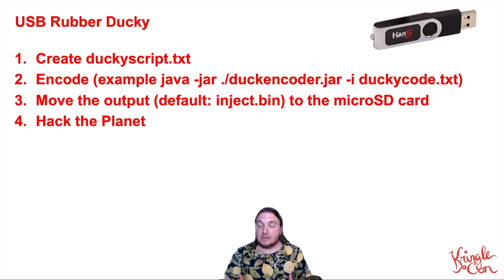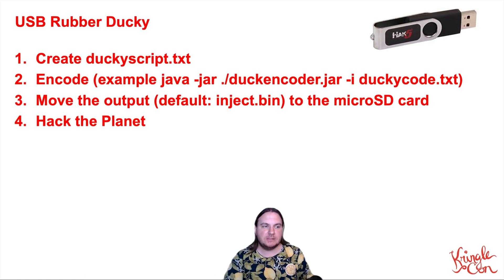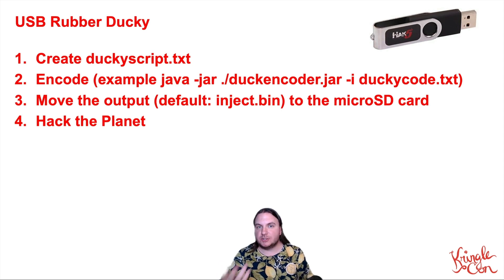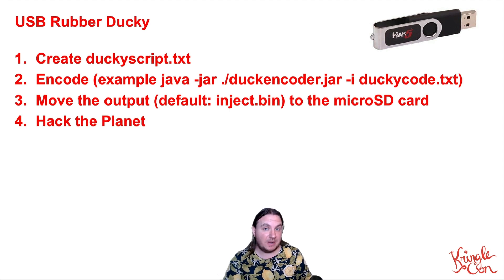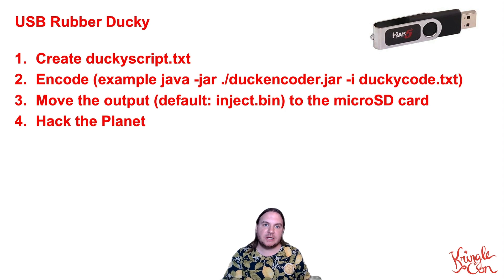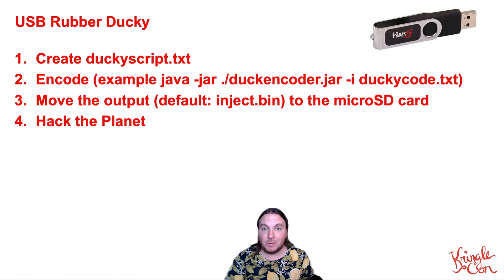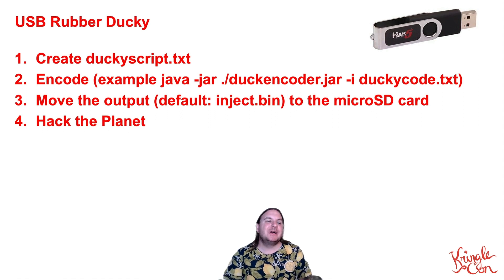To actually load the payload onto a USB rubber ducky, it's pretty simple. You create a ducky script .txt file — just your ducky script that you want to run — and then you use the Java encoder, which is the default one you'd find on GitHub. You feed it the ducky code and it spits out an inject.bin file. We move that onto a micro SD card, put that micro SD card into our USB rubber ducky, and then we hack the planet. So let's get into how we actually decode those ducky payloads.